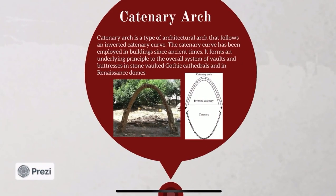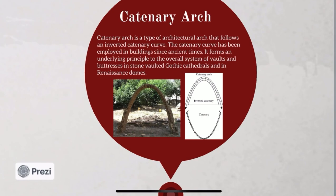And then came the catenary arch — it is a type of architectural arch that follows an inverted catenary curve. The catenary curve has been employed in buildings since ancient times. It forms an underlying principle to the overall system of walls and buttresses in stone-vaulted Gothic cathedrals and in Renaissance domes.